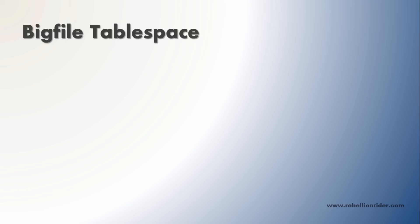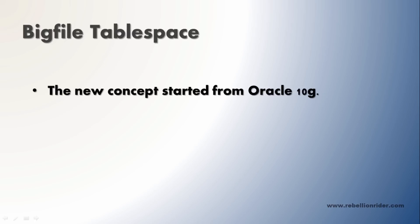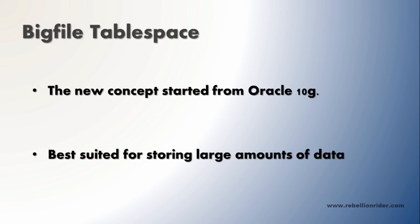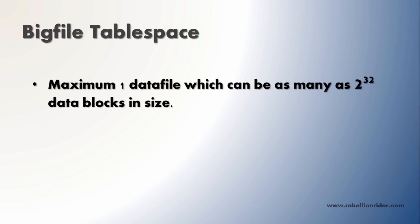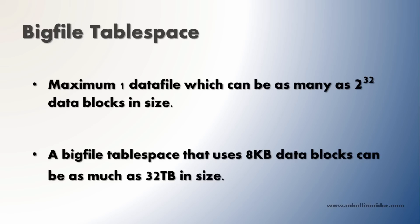Next we have big file tablespace and small file tablespace. Big file tablespace is a new concept started from Oracle 10g and is best suited for storing large amounts of data. A big file tablespace can have a maximum of one data file, meaning big file tablespaces are built on a single data file which can be as many as 2 raised to 32 data blocks in size. So a big file tablespace that uses 8 KB data blocks can be as large as 32 terabytes in size.